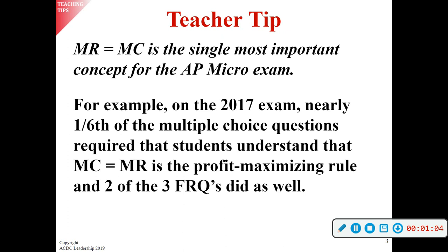Profit is the amount of money they get to keep when they remove their cost from their revenue. Revenue is the amount of money you bring in; cost is the amount you have to spend. When you produce that next unit — say we're producing pizzas — as long as the marginal revenue of that next unit is greater than the marginal cost, you're going to produce it. At any point it costs more to make than what you can sell it for, the business will stop production.